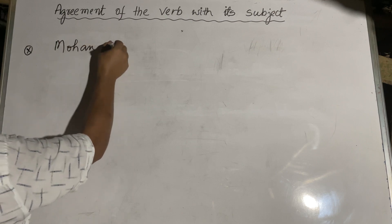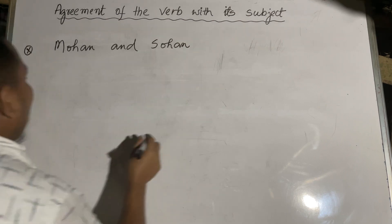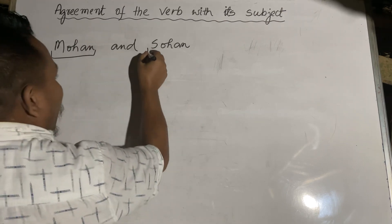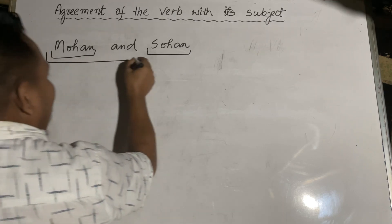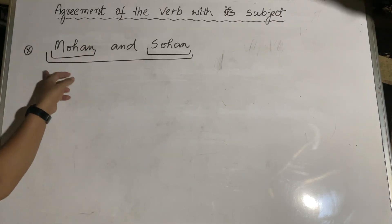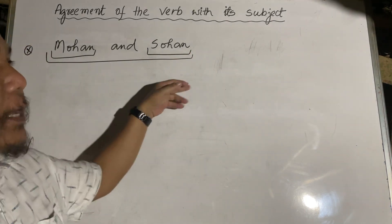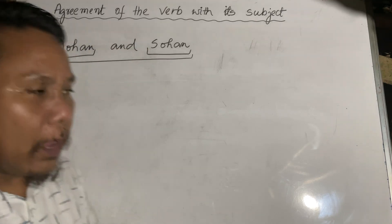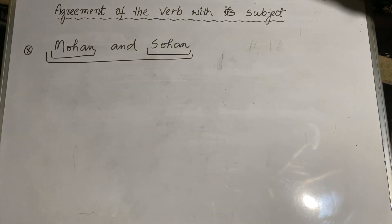Here is an example: Mohan and Sohan. Mohan is singular and Sohan — and the sentence is subject. So this is subject, this is verb. So the subject is Mohan and Sohan, and the plural is plural.